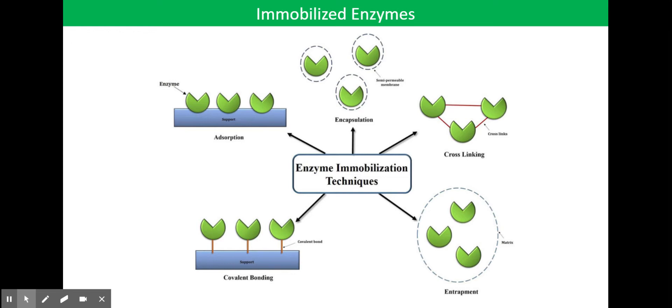Secondly, we're going to look at covalent bonding. Enzyme molecules are bonded to a supporting surface such as clay using strong covalent bonding. The enzymes are bonded using a cross-linking agent which may also link them in a chain.